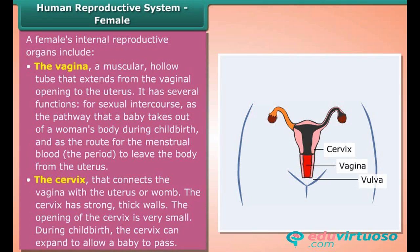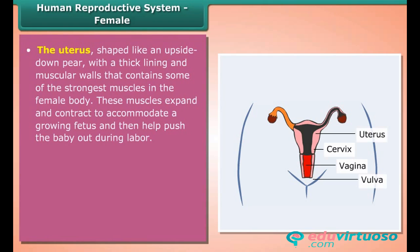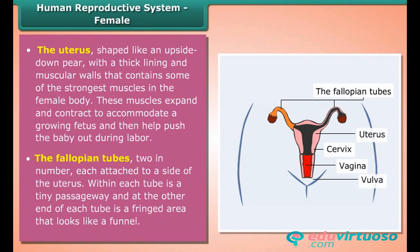The opening of the cervix is very small, but during childbirth the cervix can expand to allow a baby to pass. The uterus is shaped like an upside-down pear with a thick lining and muscular walls, containing some of the strongest muscles in the female body. These muscles expand and contract to accommodate a growing fetus and then help push the baby out during labor. The fallopian tubes, two in number, are each attached to a side of the uterus, with a tiny passageway inside each tube.